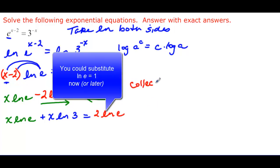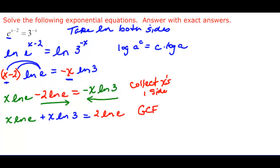And over here, now we are going to take the greatest common factor. So we have a greatest common factor of x. ln e plus ln 3. Because again, here's my greatest common factor. So that's on the outside. And then that will be equal to the 2 ln e.